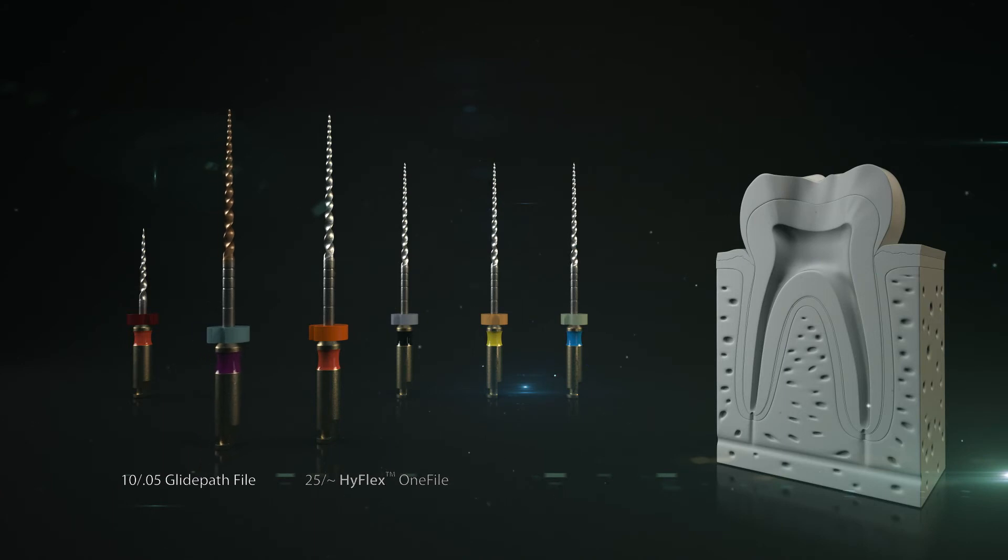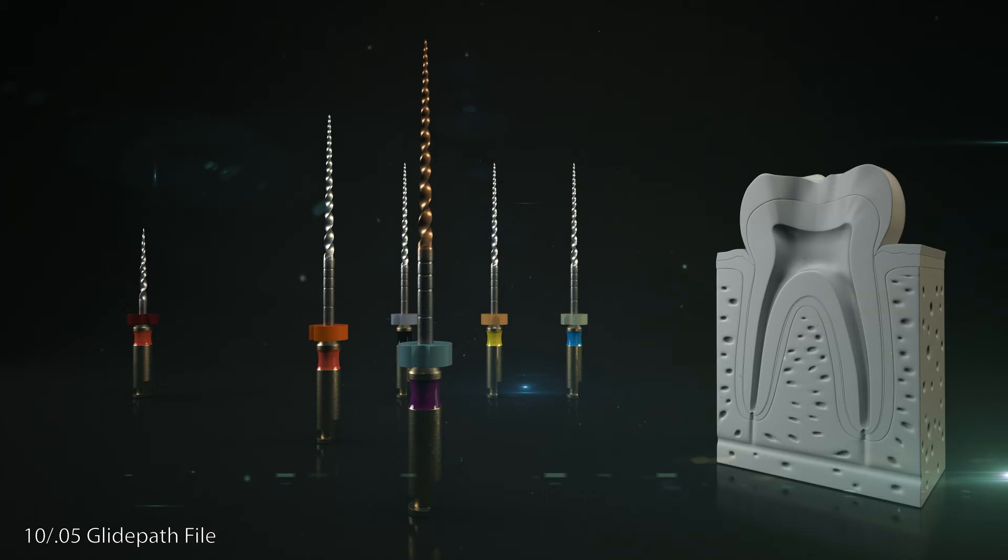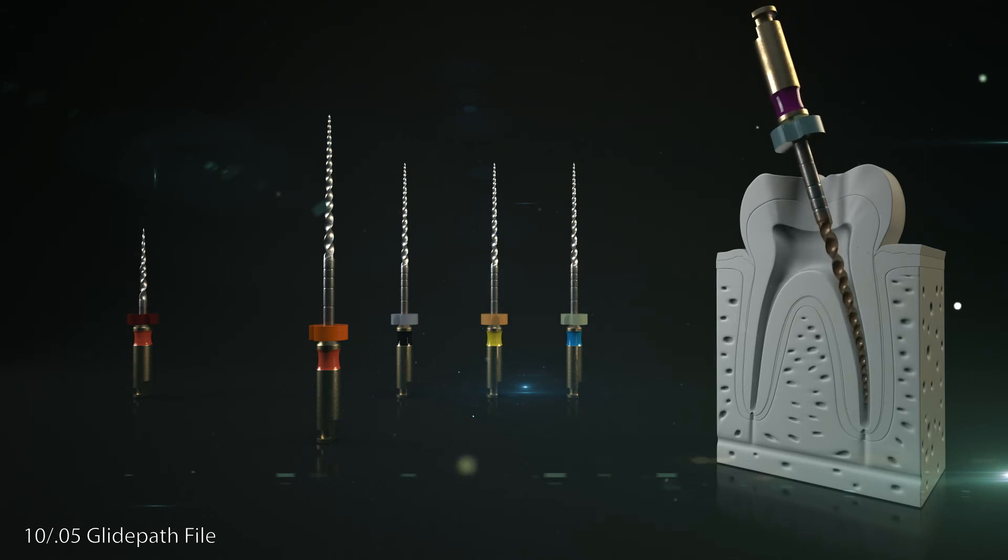Step 1: A 10 over .05 glide path file is used to create a mechanical glide path. The file is used up to its full working length with a pecking motion advancing without pressure. If there is noticeable resistance, the dentist checks the patency with a 20 over .02 manual file.